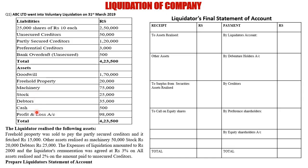The adjustments state that the liquidator realized the following assets. Freehold property was sold to pay partly secured creditors and it fetched Rs. 15,000. So freehold property costing Rs. 20,000 was realized at Rs. 15,000 and was used to clear out partly secured creditors, which amount to Rs. 1,20,000.